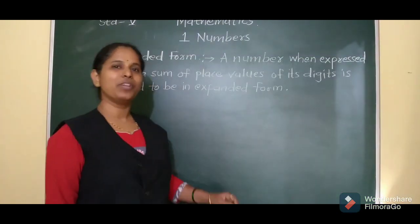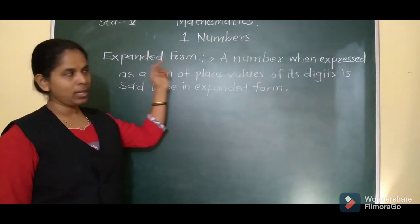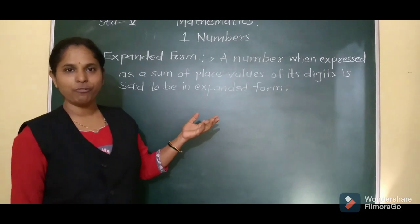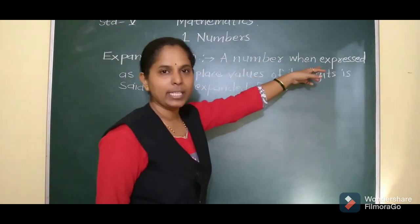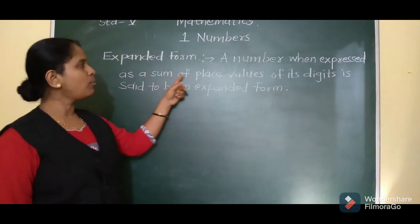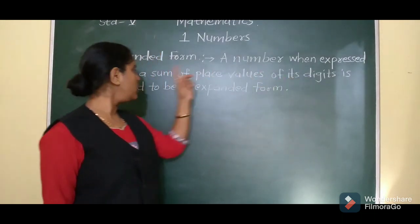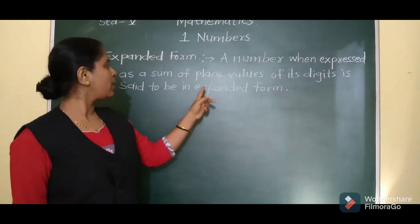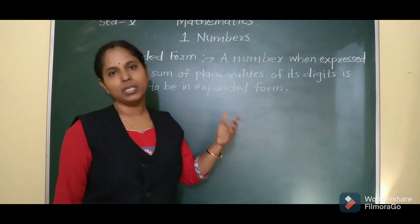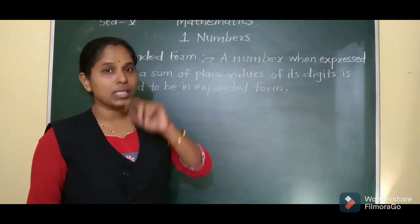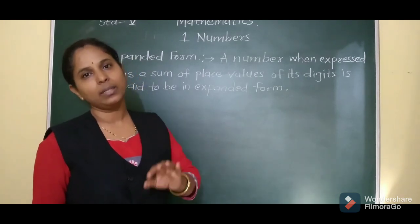The next topic we are going to learn is expanded form. A number when expressed as a sum of place values of its digits is said to be in expanded form. Expanded form is nothing but the sum of the place values of the digits given in the number.